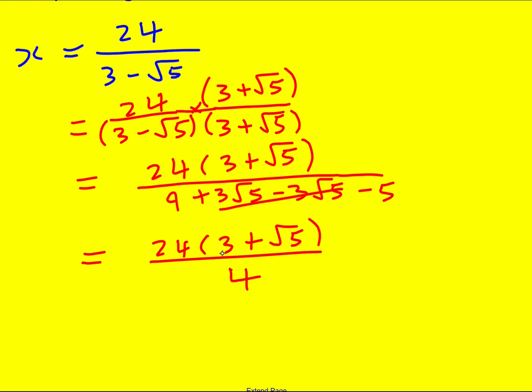And in fact, yes, it paid to not expand it, because these are going to cancel partially. Cancel out that 4 with the 24 to just leave 6. And that's going to give me 18 plus 6 root 5, which is my final answer.